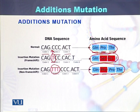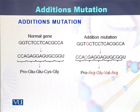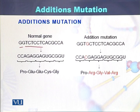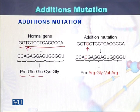Addition of nucleotides is usually severe in nature as the amino acid sequence of the protein changes. In case of the normal sequence of the gene, a new nucleotide has been added between this T and C. As a result of this new nucleotide, the original sequence of the protein was proline, glutamic acid, glutamic acid, cysteine, glycine. Now it has become proline, arginine, glycine, valine, and arginine.